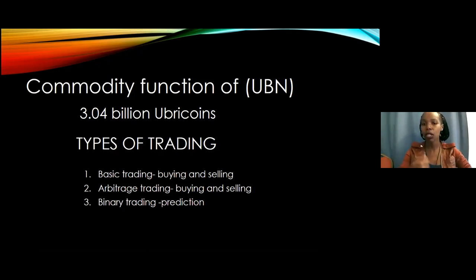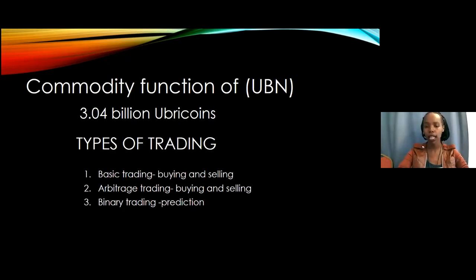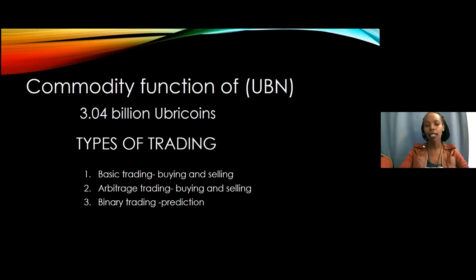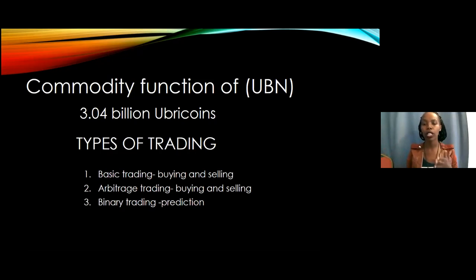In arbitrage trading, you buy in one market and sell in another to make your profit. Then we have binary trading, which involves predictions. When you predict that the price of a certain coin is going to go up or down, and when you're right, you get some profit. If you're wrong, some money is taken from you.